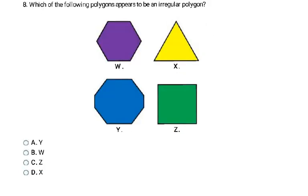Which of these appears to be an irregular polygon? Irregular means not regular — different sizes for the sides and angles. Looking at Y: these sides are longer and this one is definitely shorter, so the sides are different sizes. Y is my irregular polygon.